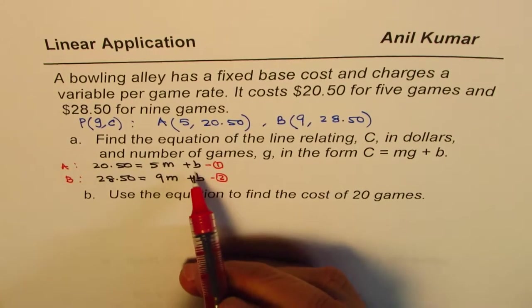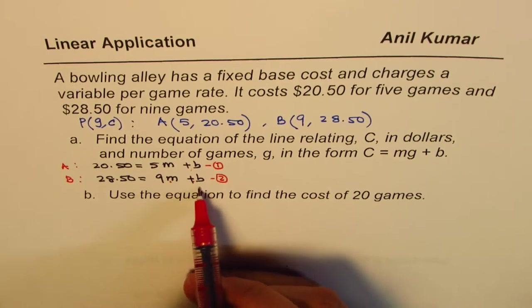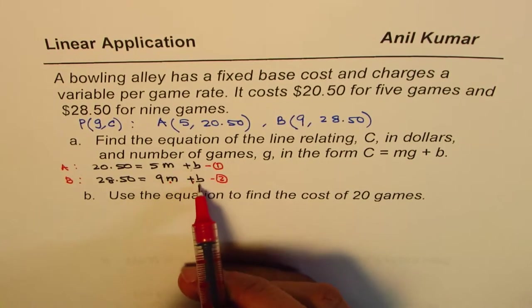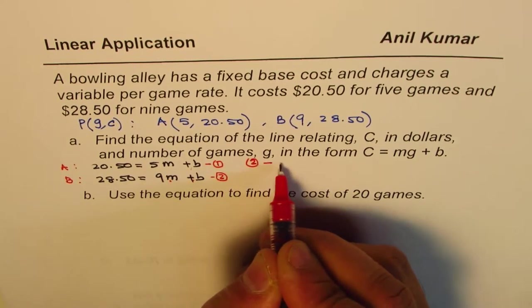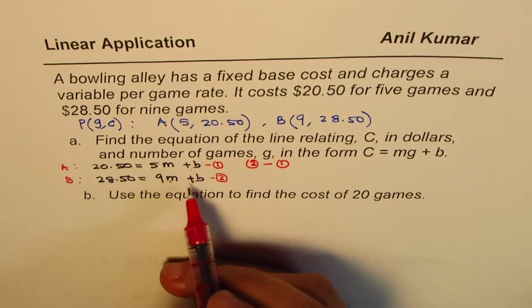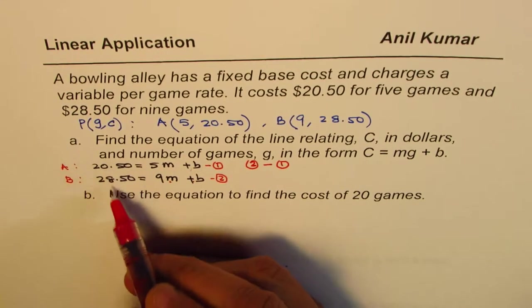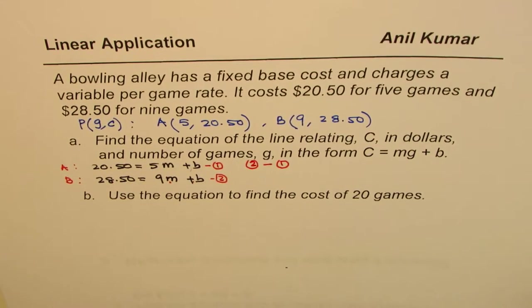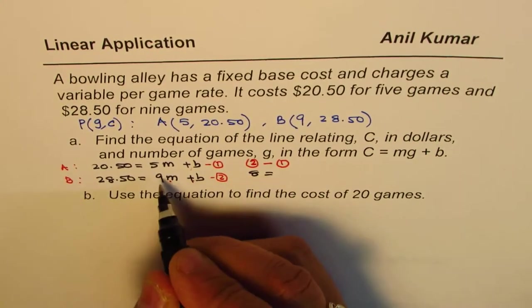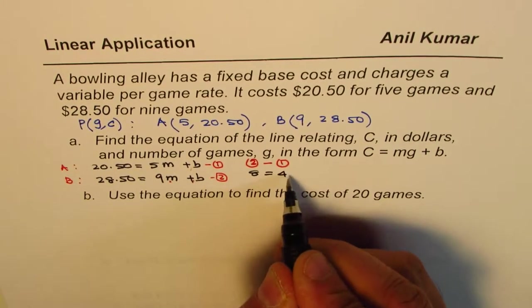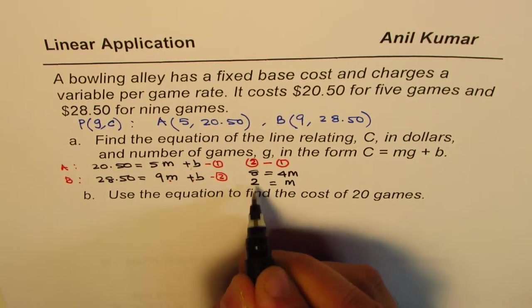Now, we could do elimination or substitution to solve for these two unknowns. It is better to do elimination since B and B can cancel out. So, we'll do equation 2, take away equation 1. As soon as I do that, you can see B and B cancels out. So, we are doing from this, take away that. If I do that, I get 8 equals to 9 minus 5 is 4, M, or I get M equals to 8 divided by 4, which is 2.